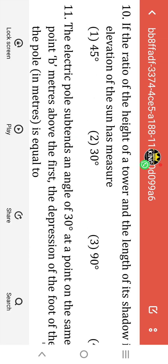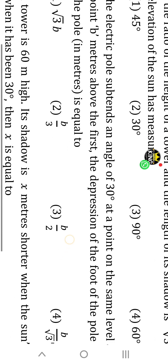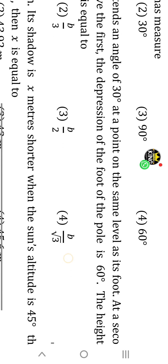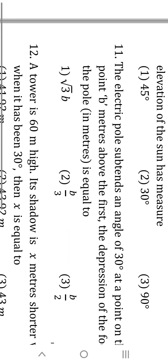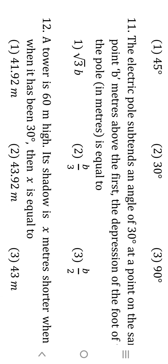Eleventh question: an electric pole subtends an angle of 30° at a point on the same level as its foot, and the distance is b meters. Since 30 degrees is given, the first number in tan30° is 1/√3. With b given, the answer is b/√3.